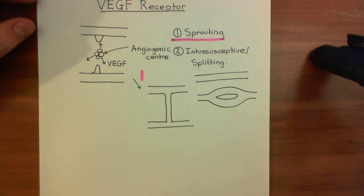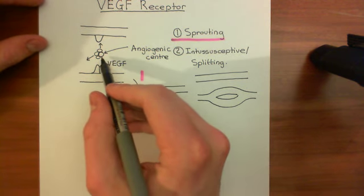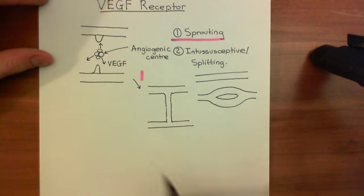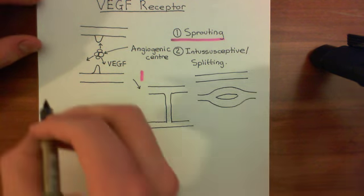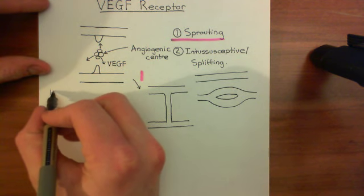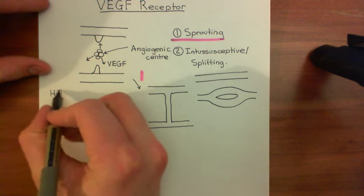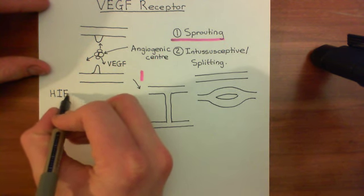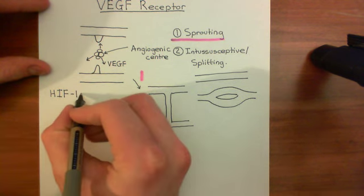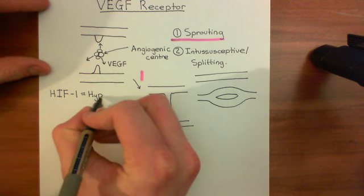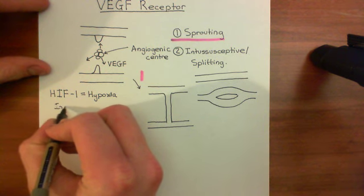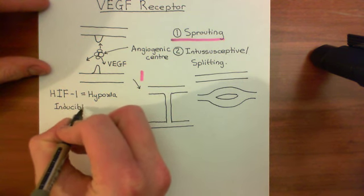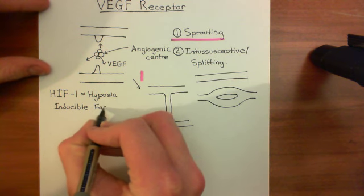The trigger for the production of vascular endothelial growth factors is something known as hypoxia-inducible factor 1, abbreviated to HIF-1. H is for hypoxia, I is for inducible, and F is for factor — so this is hypoxia-inducible factor 1.